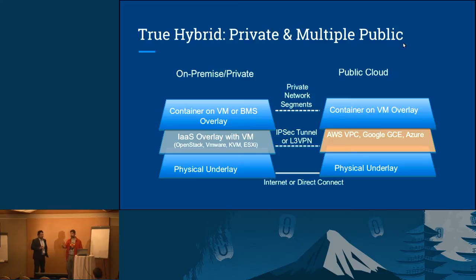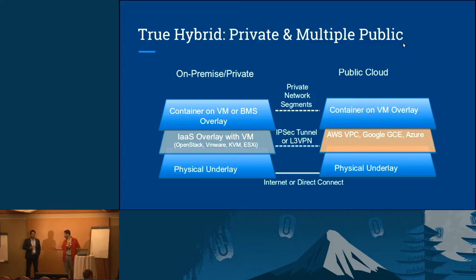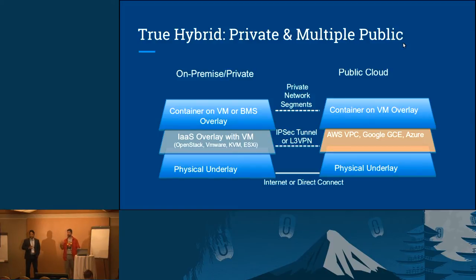If things can communicate, that doesn't always mean that the applications see it as a unified network. When you're building an application that spans clouds, you need it to look like a unified network. You need your routing, you need load balancing, you need different ways to approach the technology that don't present it as three completely segmented networks.